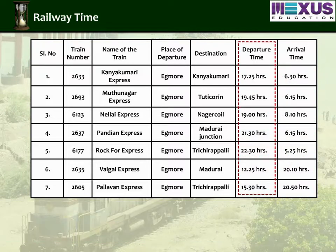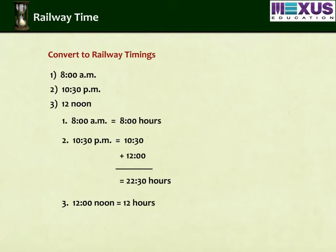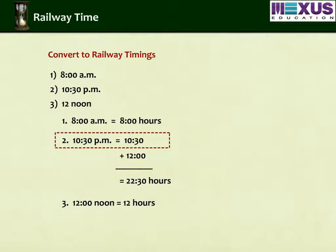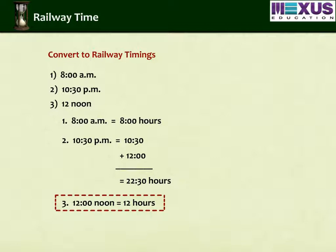The departure time and arrival time of some trains are more than 12 hours. To convert these hours into ordinary timing, we should subtract 12 from the hours column. Let us see how to convert to railway timing. First, 8 a.m. equals 8 hours. Second, 10:30 p.m. equals 10:30 plus 12, which is equal to 22:30 hours. And third, 12 noon is equal to 12 hours.